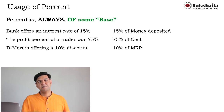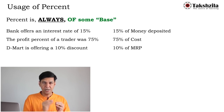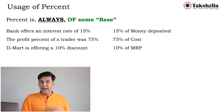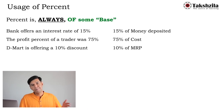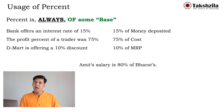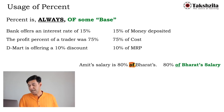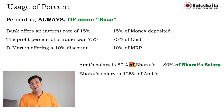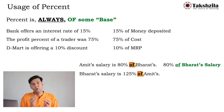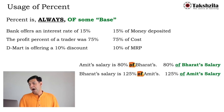When the base is not obvious, it is given in the question. For example: 'Amit's salary is 80% of Bharat's.' The word 'of' is the key clue — 80% of Bharat, so Amit's salary = 0.8 × Bharat's salary. Reversing: 'Bharat's salary is 125% of Amit's' — here the base is Amit, so Bharat's salary = 1.25 × Amit's salary.